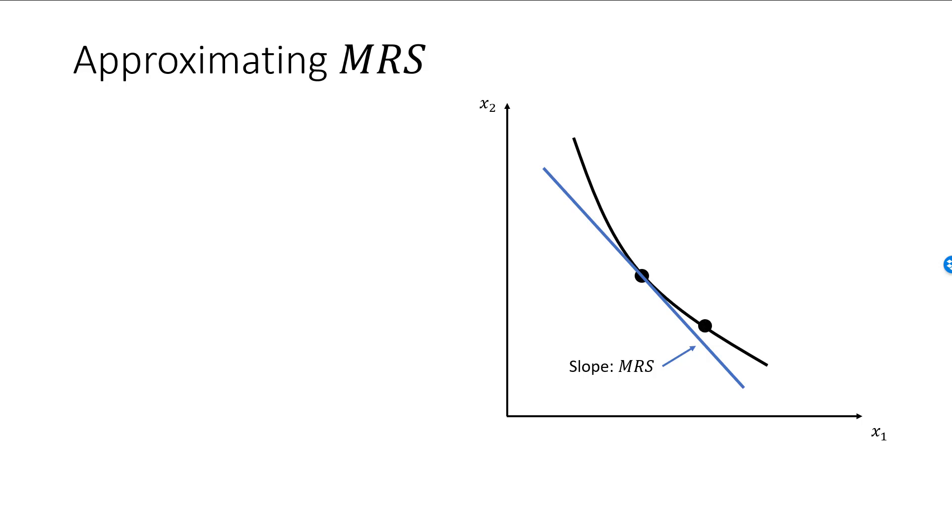Let's pick another bundle on the indifference curve close to the first one. The second point really should be closer to the first one, but I need to draw it like this in order not to mess up the graph too much. As you can see, we have increased consumption of good 1 by an amount that we denote by delta x1. We have decreased consumption of good 2, and therefore delta x2 is negative. Delta x2 itself measures the increase in consumption of good 2.